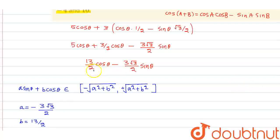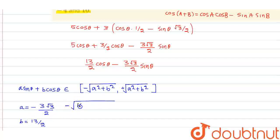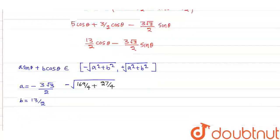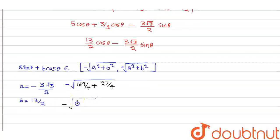So the range goes to minus the square root of: a² = (13/2)² = 169/4, plus b² = (3√3/2)² = 9×3/4 = 27/4. Adding these up: 169/4 + 27/4 = 196/4.